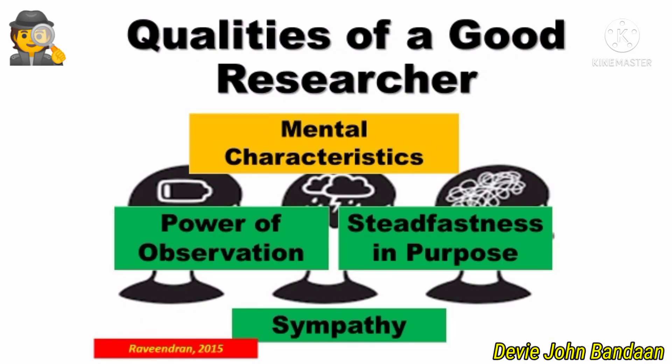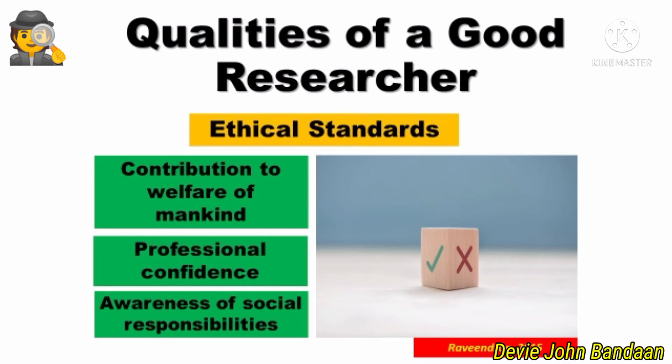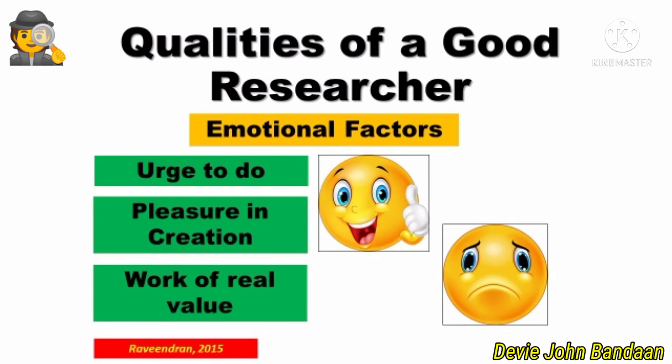The mental characteristics of a researcher include a power of observation, steadfastness in purpose, and sympathy. Under ethical standards, a good researcher should contribute to the welfare of mankind, and has professional confidence and an awareness of social responsibilities. Researchers are prone to stress because of the work, and therefore should have these qualities in order to succeed.